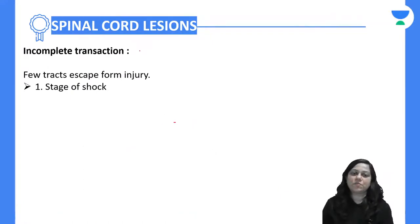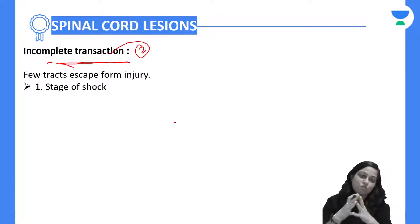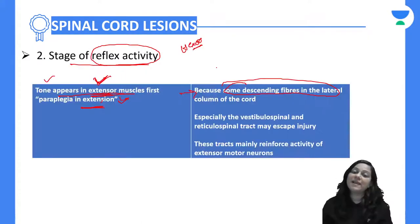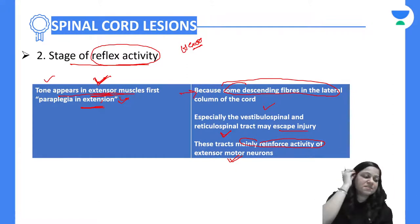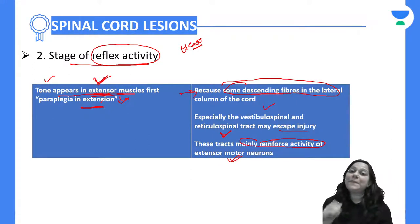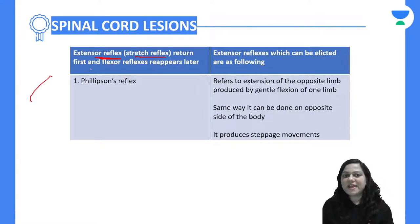Now for incomplete transaction: the vestibulospinal and reticulospinal tracts will escape from injury. These tracts reinforce the activity of extensor motor neurons, so tone first appears in the extensor muscles. In incomplete transaction, there is paraplegia in extension. The extensor reflex or stretch reflex returns first and the flexor reflex appears later.